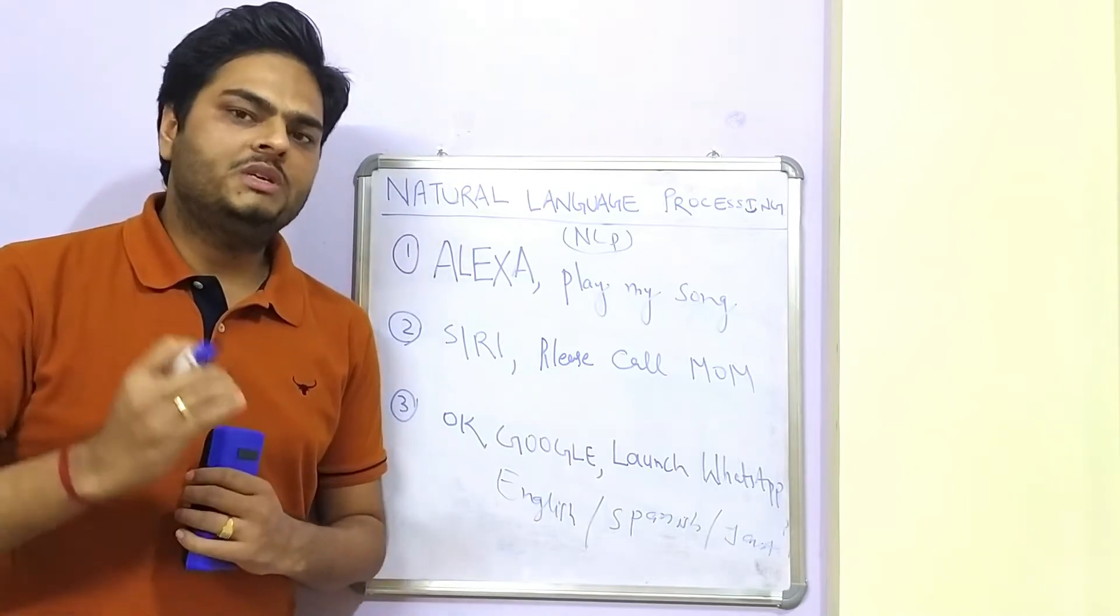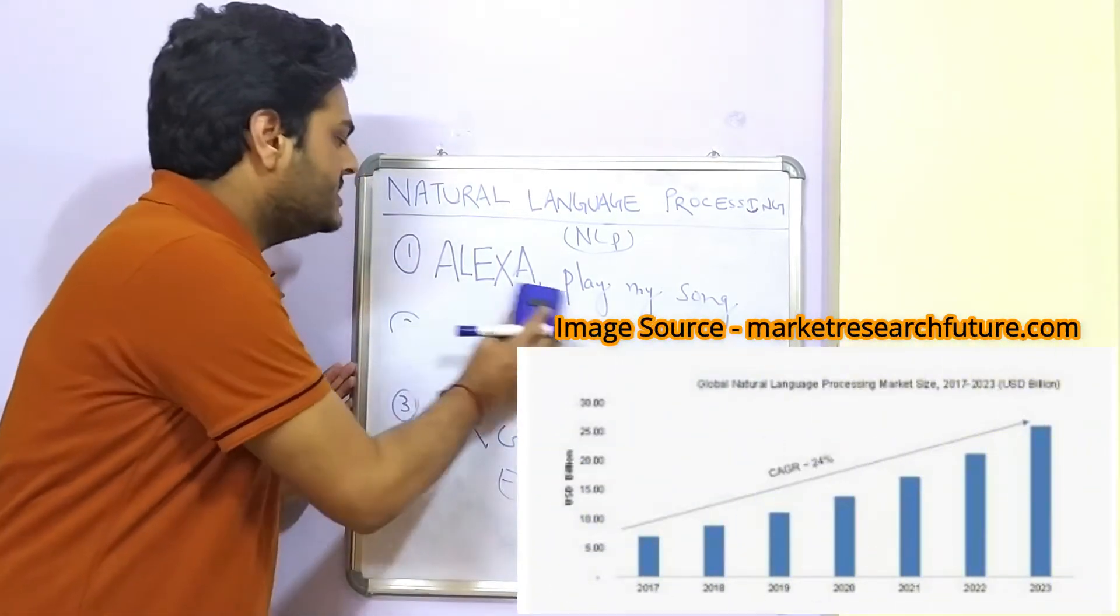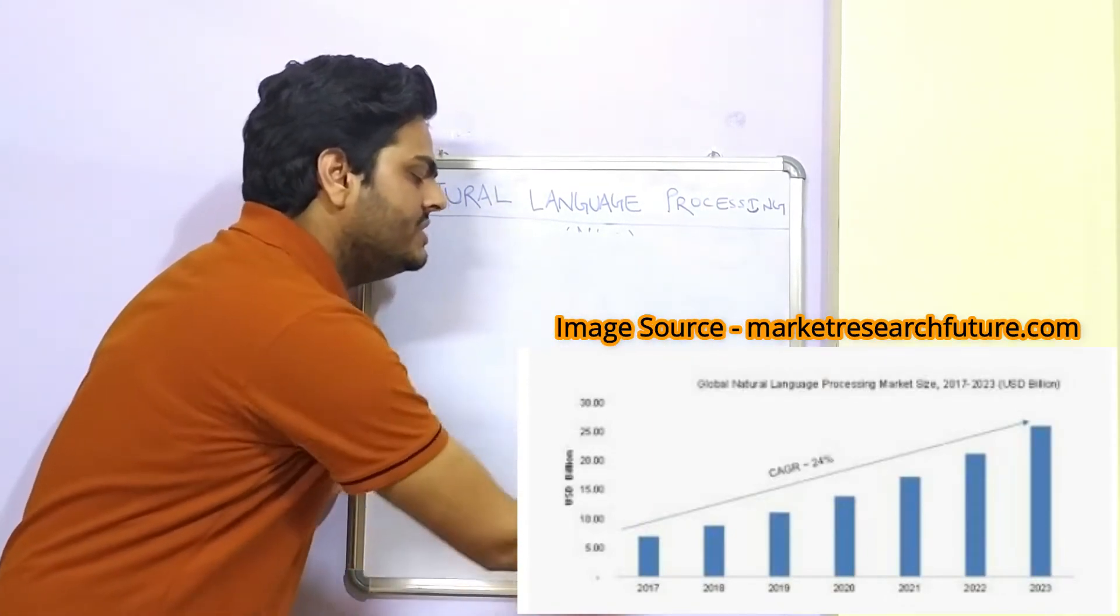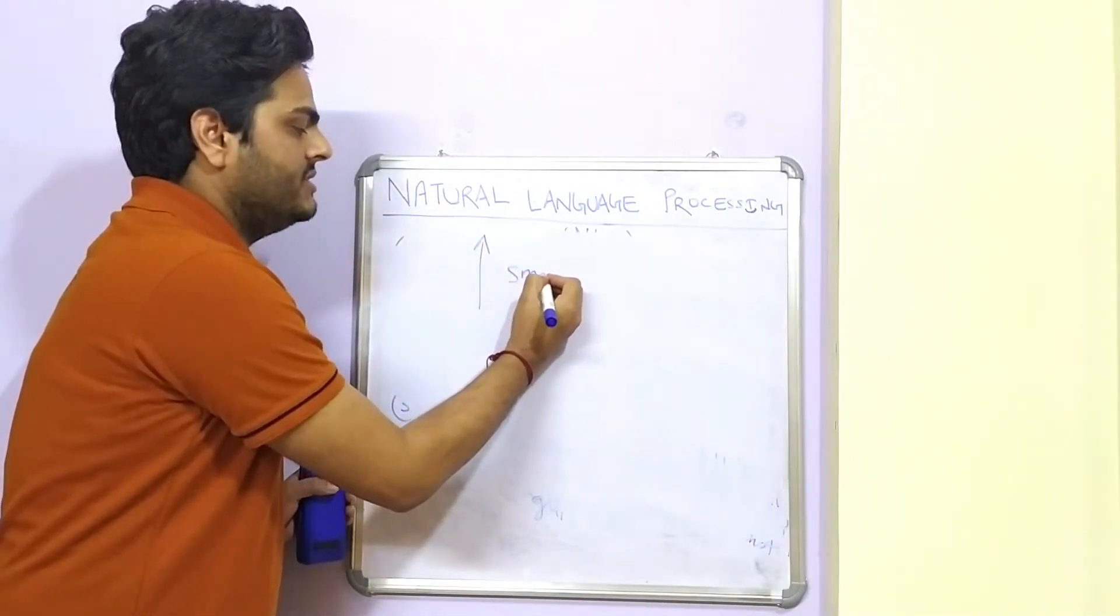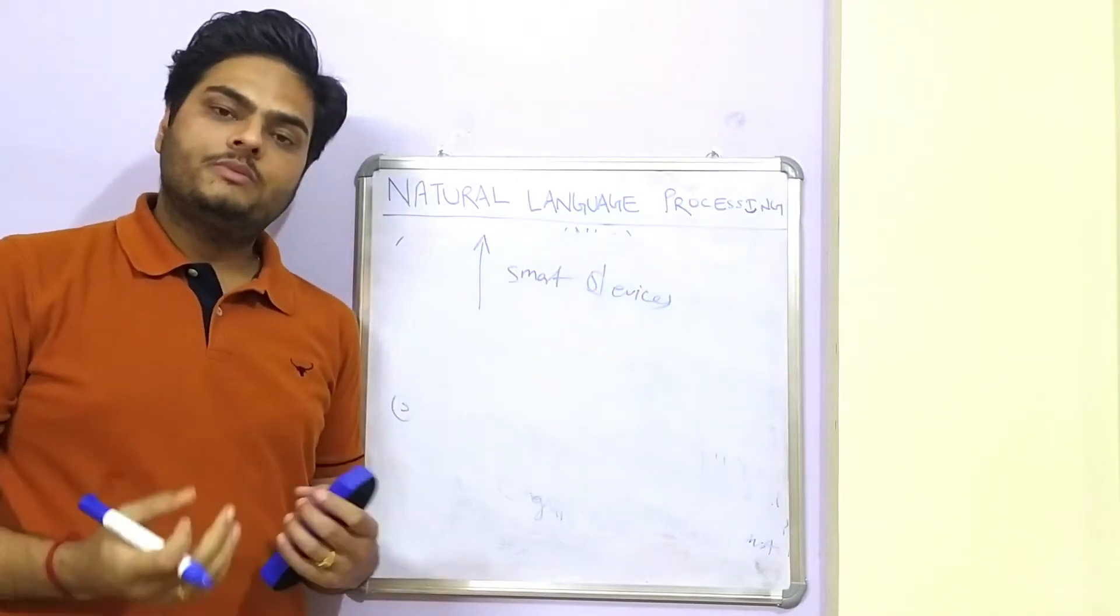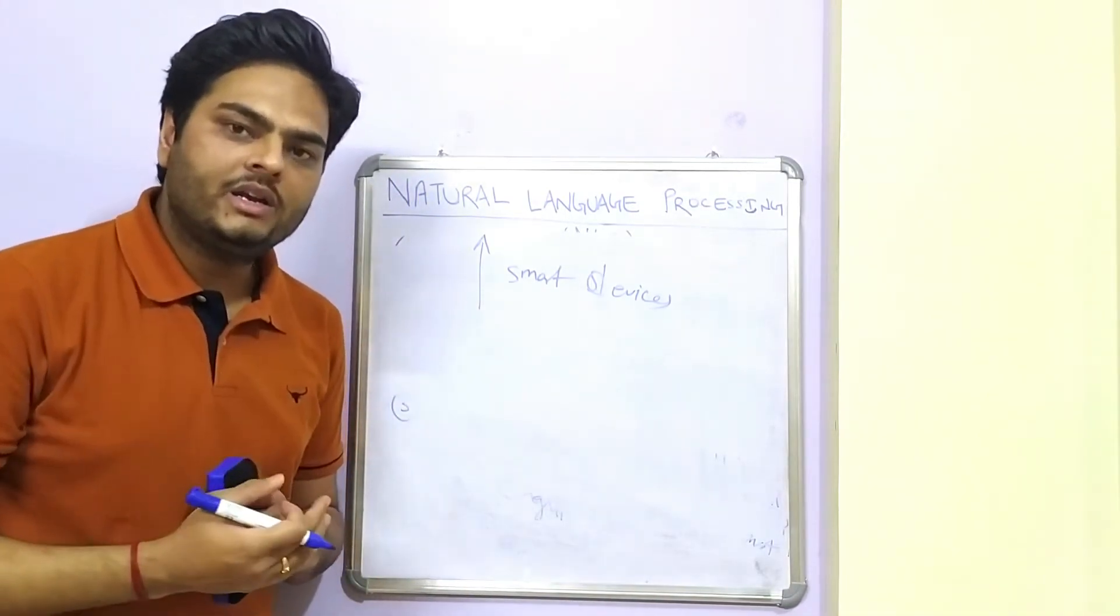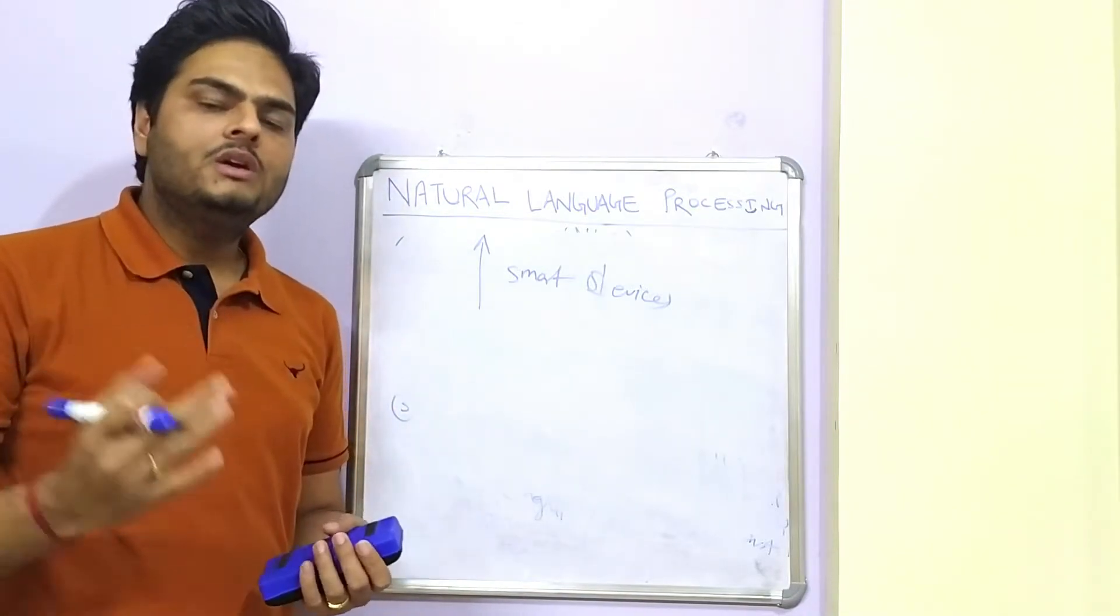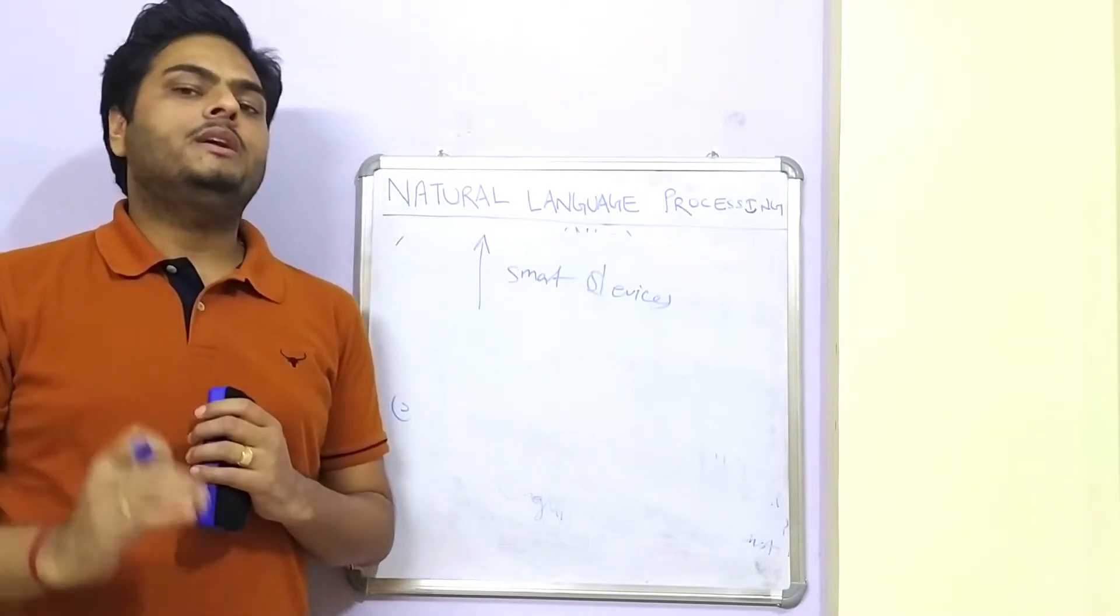Now, why NLP has gained so much demand in recent times? To know that we should first try to understand what had changed in recent times. So what had changed in recent times is there is a huge spike in use of smart devices. So what is the meaning of smart devices? All your tabs, all your high end phones, all your 4G, high end networks. So internet connectivity has reached everywhere. People have smartphone and tabs in their hand. And what are they doing?